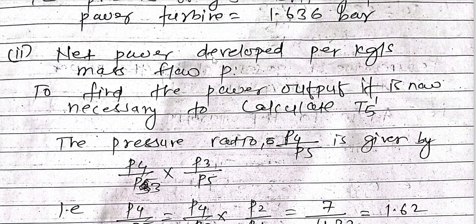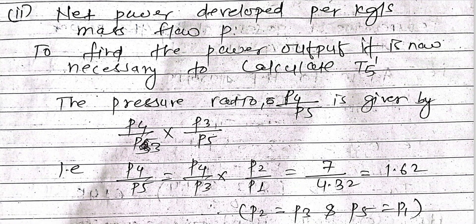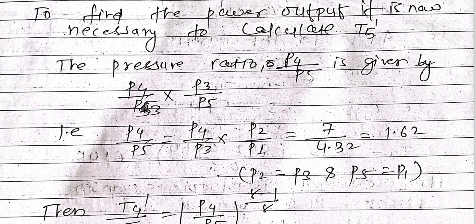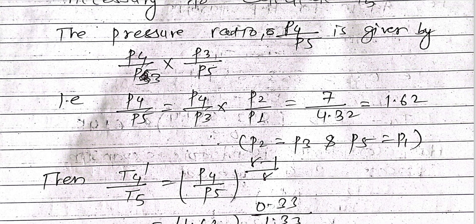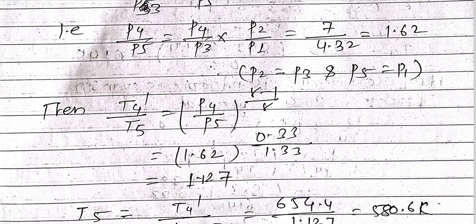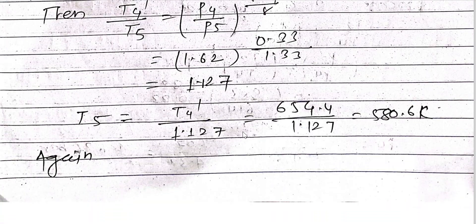To find the net power developed per kg per second mass flow, we first need to calculate T5'. The pressure ratio for the LP turbine is: P4/P5 = (P4/P3) × (P3/P5) = (P4/P3) × (P2/P1), since P2 = P3 and P5 = P1. This gives P4/P5 = 4.32:1.62. Then applying T4'/T5 = (P4/P5)^((gamma-1)/gamma), we calculate T5.